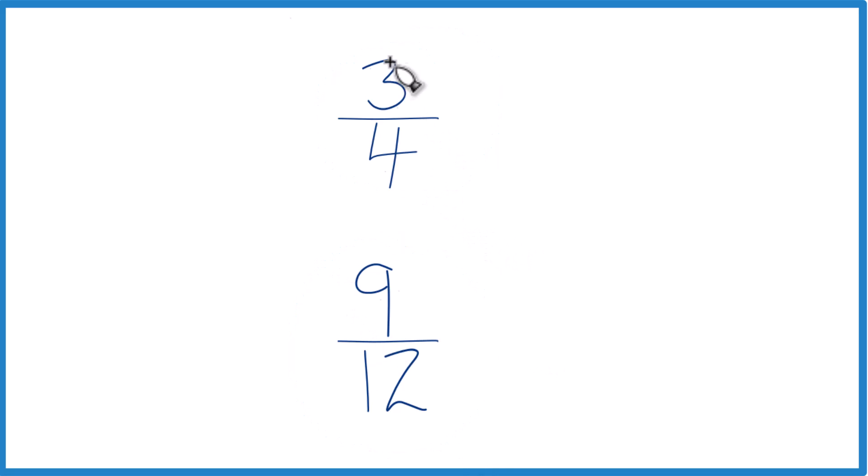So if you wanted to do this, you could just divide 3 by 4 in a calculator, 9 by 12, get those decimals and compare them. That would tell you if 3 fourths is greater than, less than, or equal to 9 twelfths.